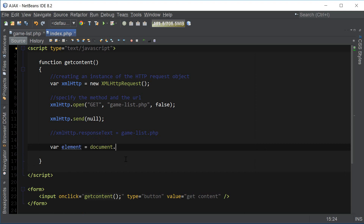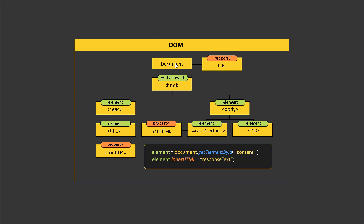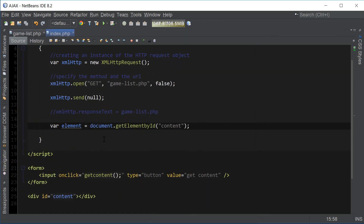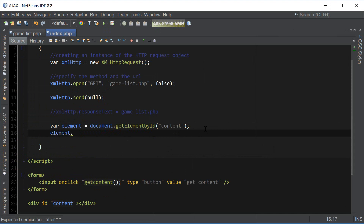Now we have access to the XMLHttpRequest response. First let's create a new variable and call it element, then we're gonna use document.getElementById('content') to select our div tag. As we saw on the DOM chart, document is the object, getElementById is the method, and 'content' is the ID of the element. Once we have selected the element we have access to its innerHTML property, and we set element.innerHTML equal to xmlhttp.responseText, which is going to be our Ajax response content.